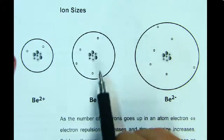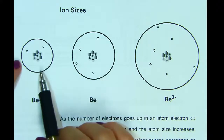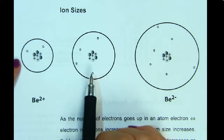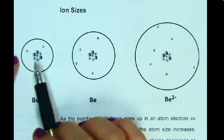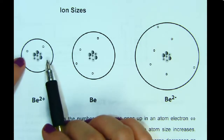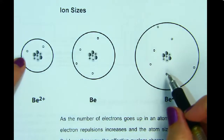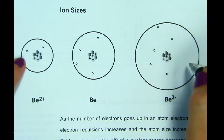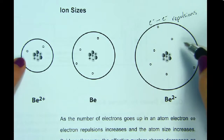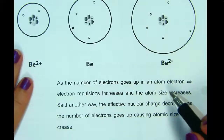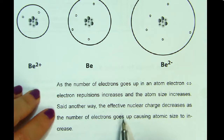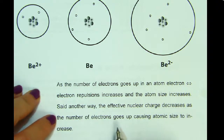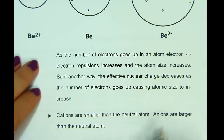Atomic and ionic sizes. For a neutral beryllium atom, when it gains a positive charge, electrons are lost, so the effective nuclear charge — four protons — is now pulling on only two electrons instead of four, and the size gets smaller. When the charge becomes negative, more electrons are gained, increasing electron-electron repulsions, which causes the ion to be larger. As the number of electrons goes up, electron-electron repulsions increase, the effective nuclear charge felt by outer electrons decreases, and atomic size increases. Cations are smaller than the neutral atom; anions are larger than the neutral atom.